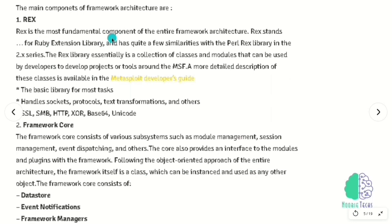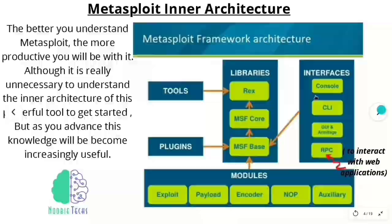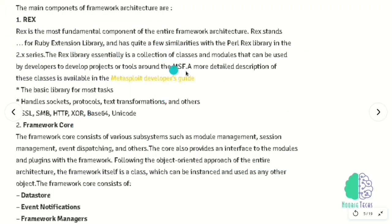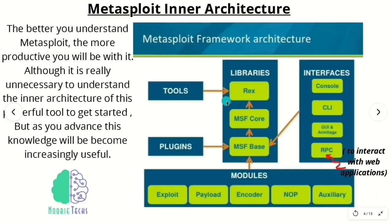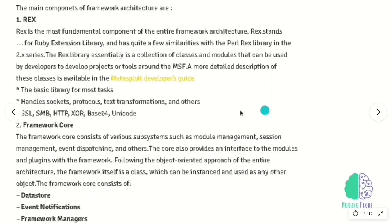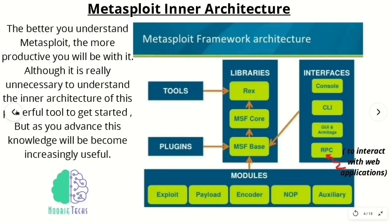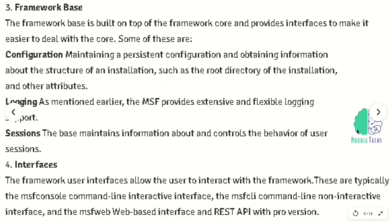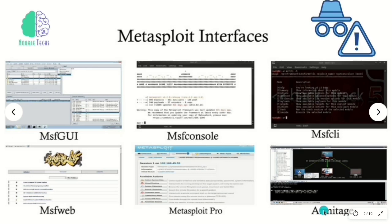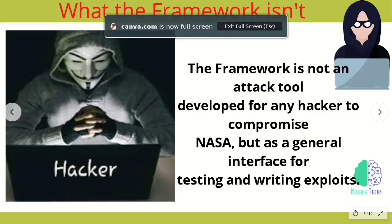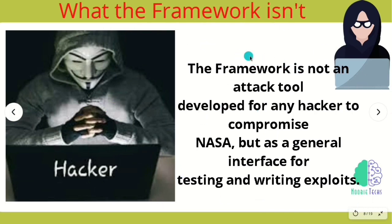Rex is a library that is a collection of classes and modules that may be useful to more than one project — if you want to know more, ping me on Telegram and I'll share the Metasploit developer guide book. The second component is the framework core, which is a way of connecting the different critical subsystems such as module and session management. Then there is the framework base, a library layer built on top of the framework core that makes dealing with the framework easier. And then there is the interface, which is generally the framework UI — MSF console and Armitage are very famous among these. Armitage is GUI-based and allows you to monitor everything on your victim's screen remotely. Although the framework is a huge tool that does wonders, it is definitely not something to use to compromise NASA.